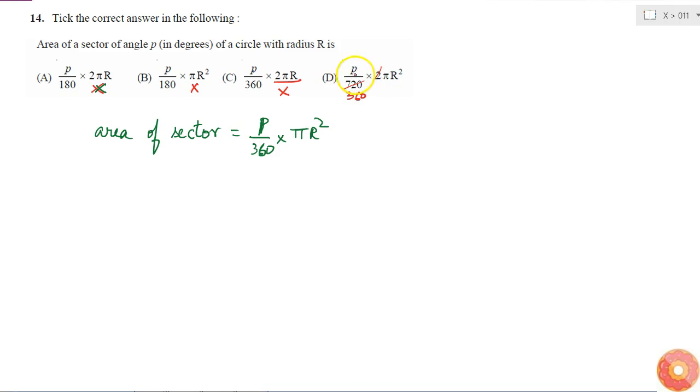So this is equal to P by 360 into pi R square, which is what is our formula for area of the sector. Therefore our answer is D.